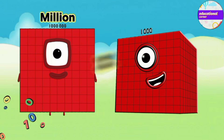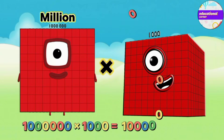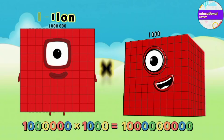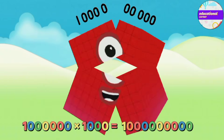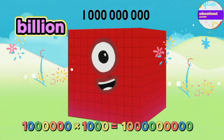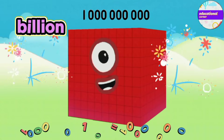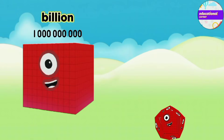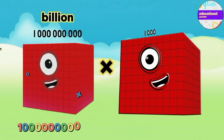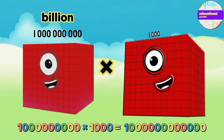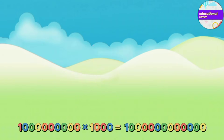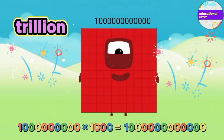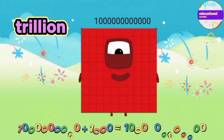Million multiply by thousand equals billion. Billion multiply by thousand equals trillion.